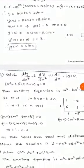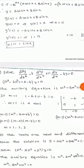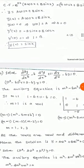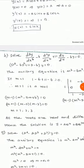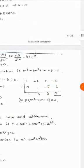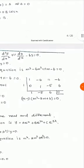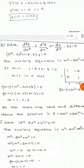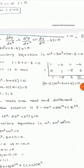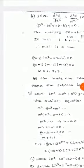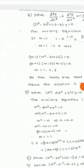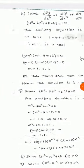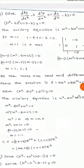Problem 4: Solve d³y/dx³ - 6(d²y/dx²) + 11(dy/dx) - 6y = 0, written as (D³ - 6D² + 11D - 6)y = 0. This is a cubic equation with three roots. Using synthetic division, we check m = 1 and confirm it is a root. The remaining quadratic equation is m² - 5m + 6 = 0, which factors as (m-2)(m-3) = 0. So the three roots are m = 1, 2, 3 — all real and different.